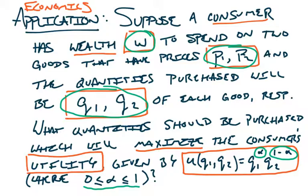What we're going to do next — hopefully now that we have the language — is go ahead and actually find the maximum for this utility function. We're set up here trying to find the maximum of some function subject to a constraint. In the next video, we're going to start by figuring out what the constraint equation should look like for this situation. Once we set that up, we'll use the method of Lagrange multipliers to figure out what quantities of each good will maximize this consumer's utility.